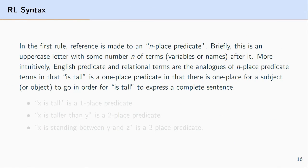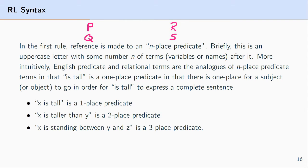The first rule makes reference to what's known as an n-place predicate — that is, if you have an n-place predicate like P, Q, R, or S, then provided there are n names after it, the result will be a well-formed formula. You can think of n-place predicates in terms of predicate expressions or relational expressions in English. For example, 'x is tall' is a one-place predicate, meaning if you put a name in place of x you get a complete sentence — substituting 'John' for x gives you 'John is tall.'